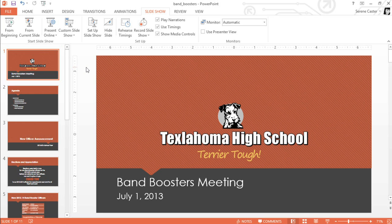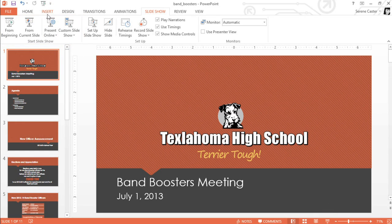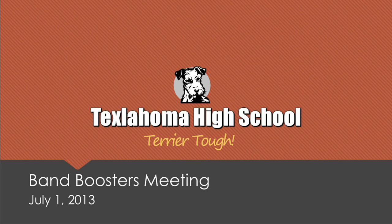To get started, you can play your presentation one of three ways: using the command on the Quick Access Toolbar, the button at the bottom of the window, or the options on the Slideshow tab. In this example, we're going to click the button up here, which will take us to the first slide in the presentation.